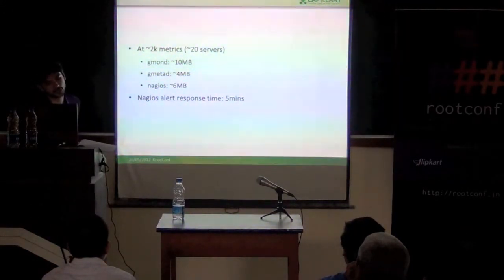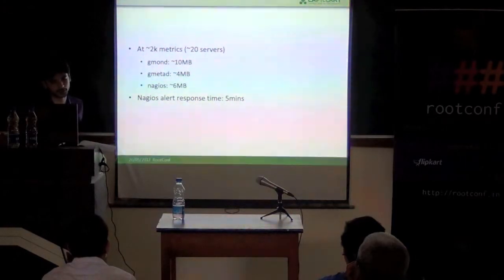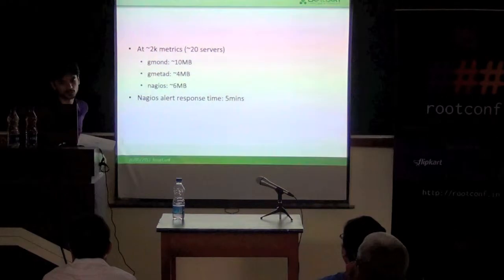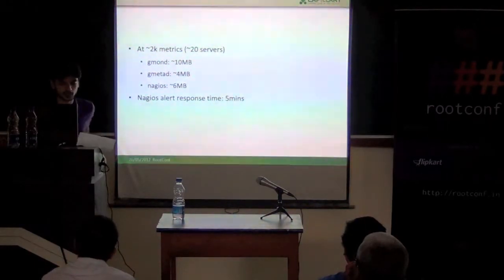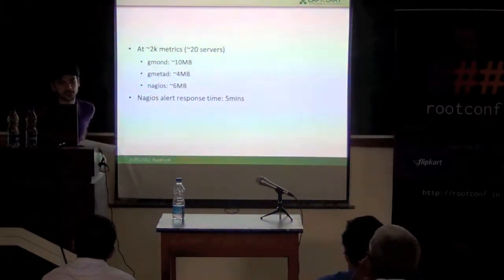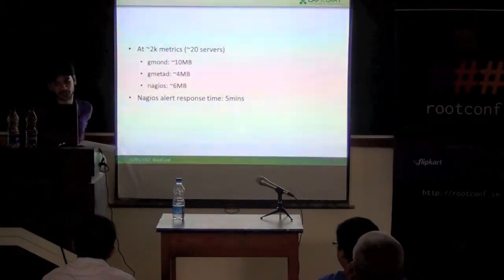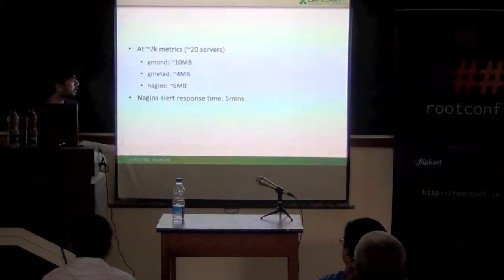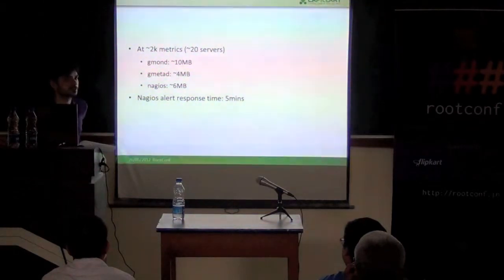Just to give an idea of what our current servers are running: using some 2000 metrics on some 20 odd servers. The normal GMOND instances took around 10 MB of RAM, GMETAD took around 4 MB of RAM, and Nagios took around 6 MB of RAM, which is quite less compared to when you scale. We get alerts within 5 minutes of things going wrong.